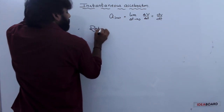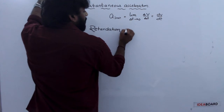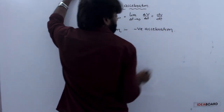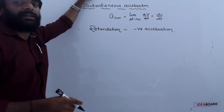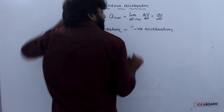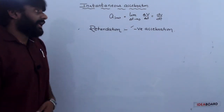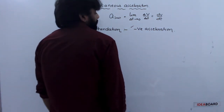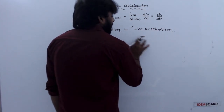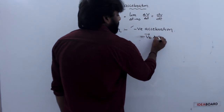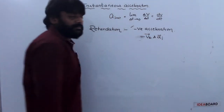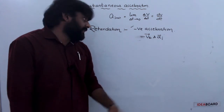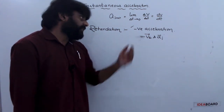Next, retardation. Retardation is nothing but negative acceleration — it is also called deceleration. Negative acceleration of the particle is called retardation. In this case, velocity direction and acceleration direction are both in opposite directions, meaning speed decreases.